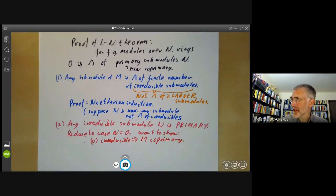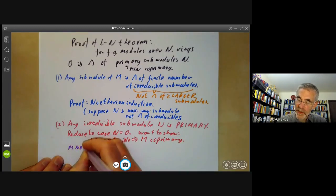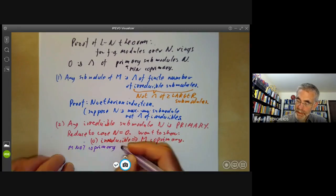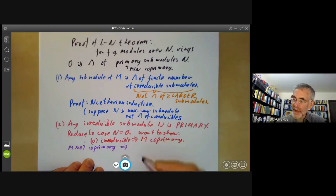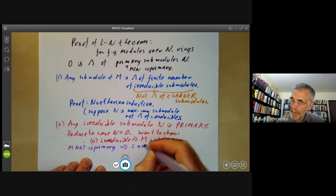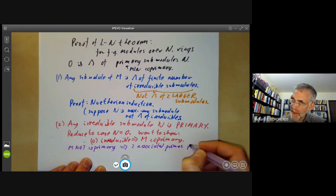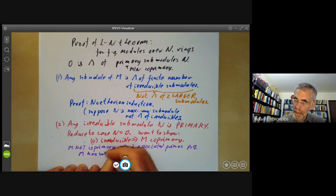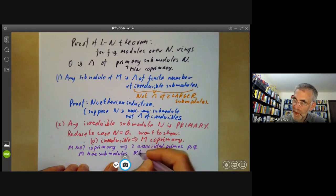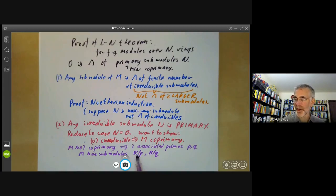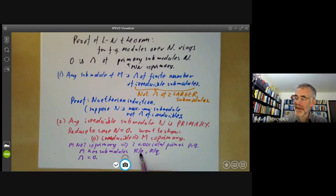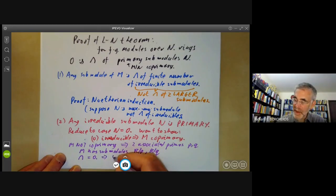Well that's quite easy, because if m is not co-primary, this implies there are two associated primes p and q. So m has submodules of the form R over p and R over q. It's a bit sloppy—it doesn't mean R over p is a submodule, it means R over p is isomorphic to a submodule, but it's fairly clear what's meant. The intersection of these two submodules is zero, because the annihilator of any non-zero element in this submodule is p, and the annihilator of any non-zero element in this submodule is q, so they must have intersection zero.